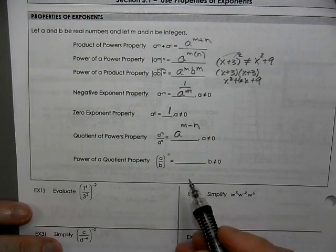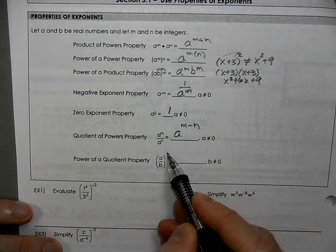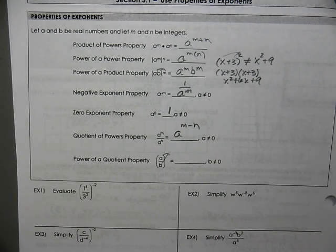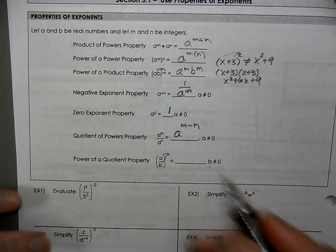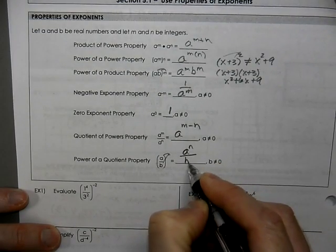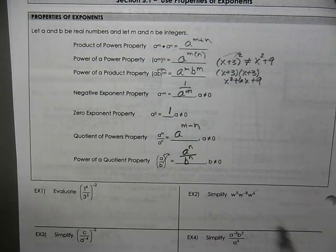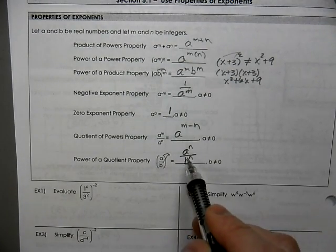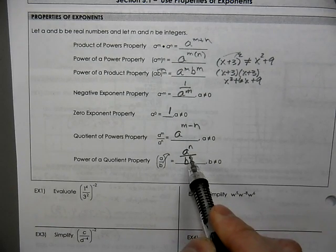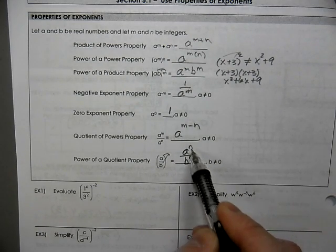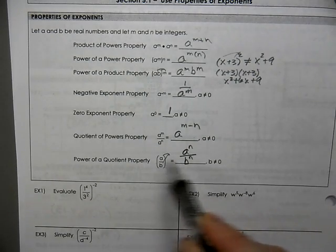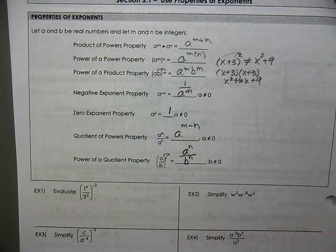Very similarly as before, if you have parentheses, we're still going to distribute that exponent to both of the exponents inside the parentheses, so this is A to the nth power and B to the nth power. What's important to recognize is you can go either way — sometimes we distribute it in, but if the bases are the same, we can pull it to the outside. You can go both ways, whichever helps in the problem.